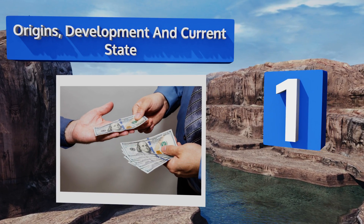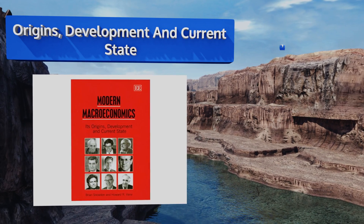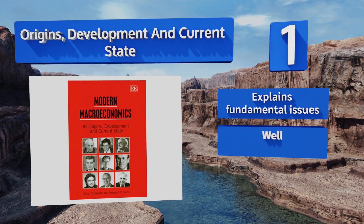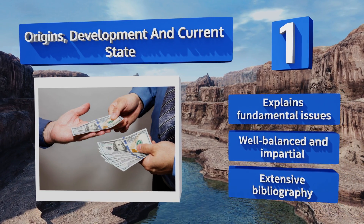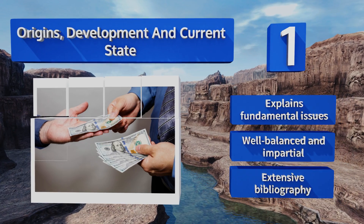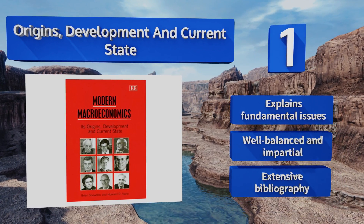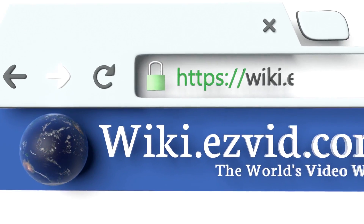Coming in at number one on our list, with Origins, Development and Current State, authors Snowdon and Vane breed life into the subject by means of illuminating interviews with leading economists, elegant perspectives on differing schools of thought, and by encouraging readers to question established policies. It explains fundamental issues and is well-balanced and impartial. It also includes an extensive bibliography.